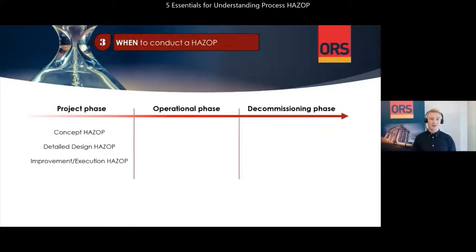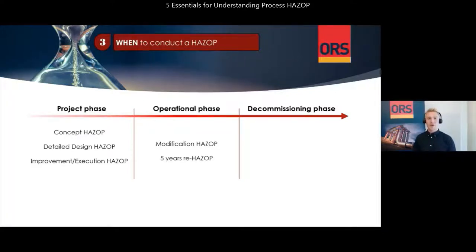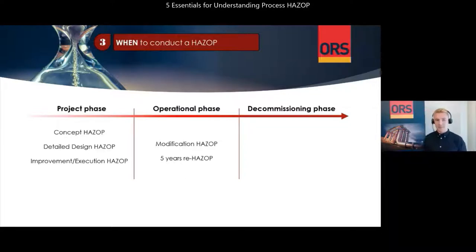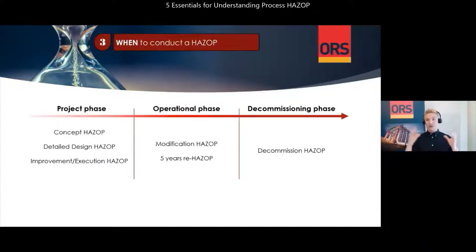A HAZOP can also be executed during operations in case of modifications that may affect the operating envelope of the process design. Or in some cases, such as Norwegian oil and gas requirements, a re-HAZOP every five years to capture lessons learned from operational experience and evaluate if the design assumptions are still valid. In addition, it ensures that emergency and operating procedures are reviewed and updated as required. A HAZOP can also be completed close to decommissioning to ensure the safe removal of parts of a process system or the entire system, and these are quite similar to modification HAZOPs.